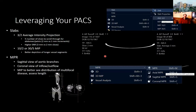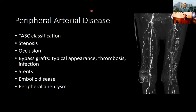Any questions about technique or the fundamentals of AIF before we move on to looking at some disease processes? Feel free to put questions into the chat. We'll turn our attention next to peripheral arterial disease.